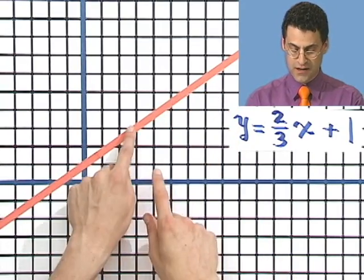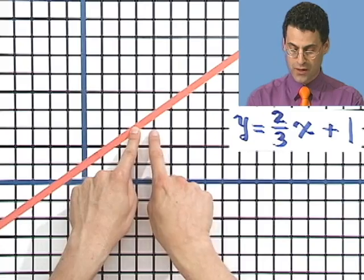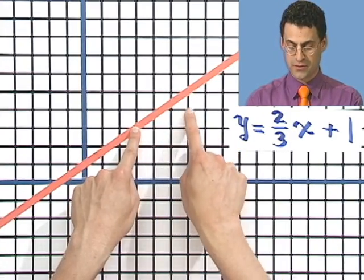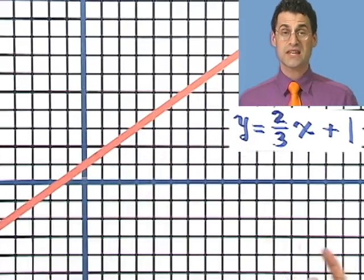And notice that no matter where you are in this line, right here, the next point, 1, 2, 3, 1, 2, is on the line. Right? 1, 2, 3, 1, 2, on the line, and so on. Okay. So there's that line.